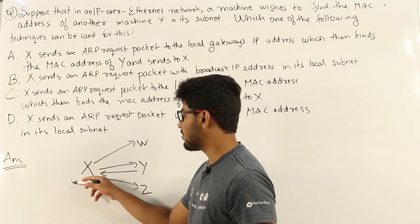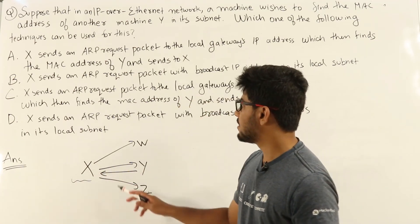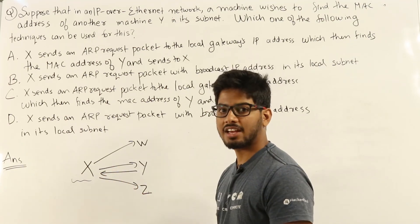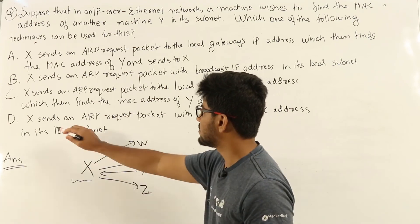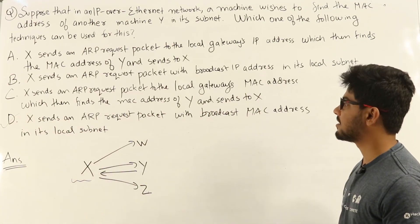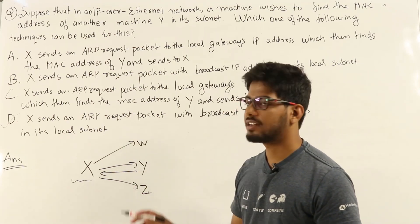Now, for that what X does is it will be sending a broadcast message with broadcast MAC. That is option D. X sends an ARP request packet with broadcast MAC address in its local subnet. The answer is D here.